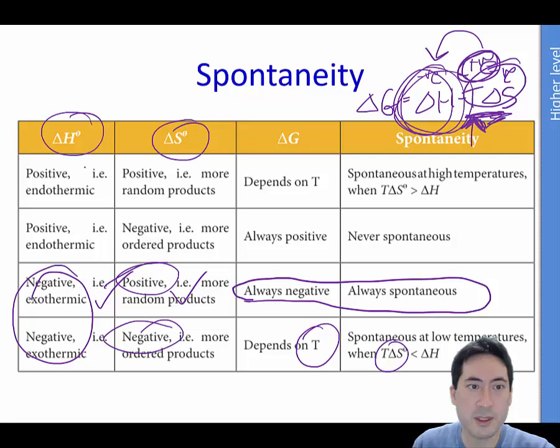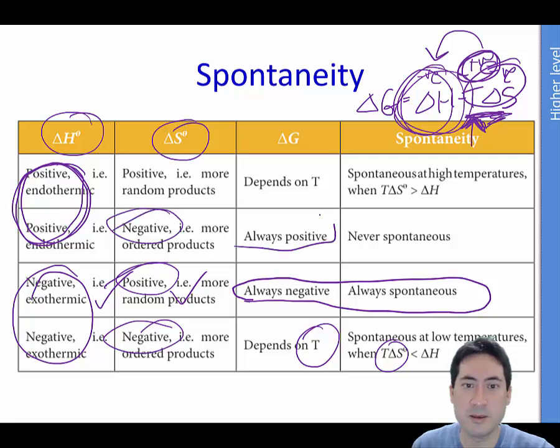Having a look here, delta H positive is not what we want, so that's not going to be spontaneous. And delta S negative is not what we want always, so that's always positive, so it's never spontaneous.